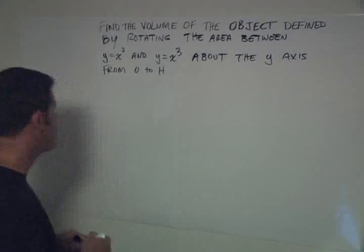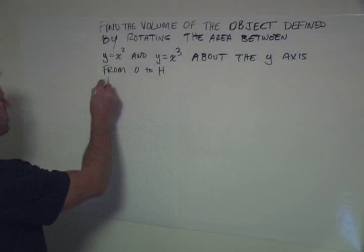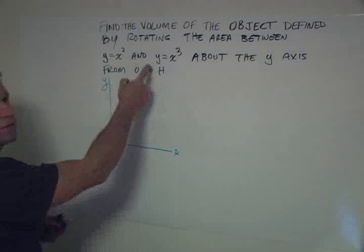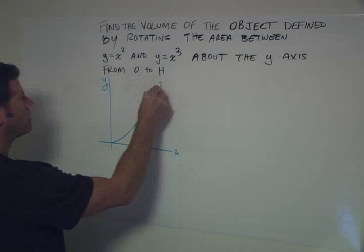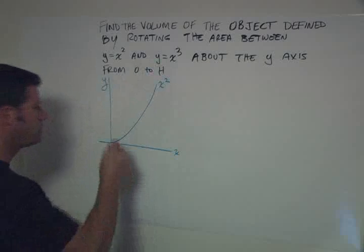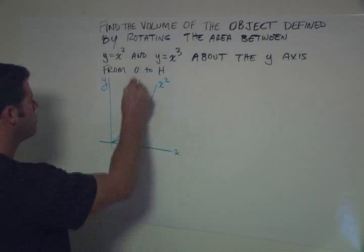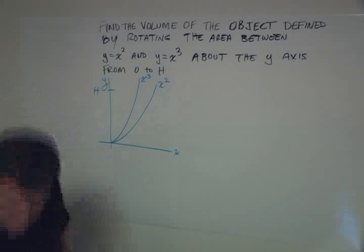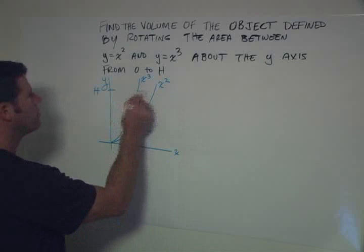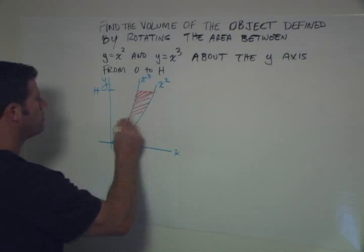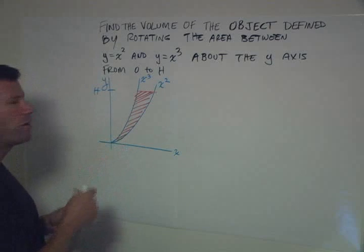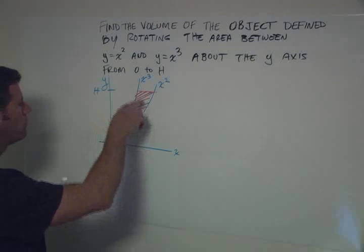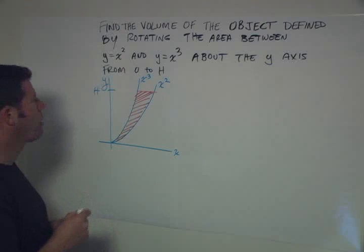Let's draw a little picture to get started. So we have y equals x squared, which looks something like that. And then y equals x cubed is just a little bit more steep from 0 to h. So we're talking about this area here. And we're going to revolve around the y axis. And then what we get is some kind of a bowl of sorts. It's hollow in here and it has a varying thickness.